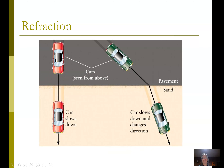The same thing happens with cars going from pavement into sand — straight on, it slows down but there's no bending. But because the right tire slows down first, it causes the whole car to bend into the sand. Coming out, as one tire hits the pavement first, it bends away from the normal. So: bending toward the normal when slowing down, bending away from the normal when speeding up.